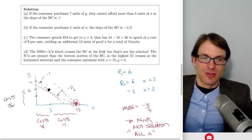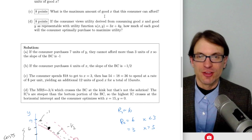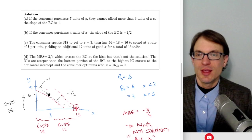With perfect substitutes preferences, to determine the optimal bundle we compare the bang-for-buck on each portion of the kinked budget constraint. We've spent $18 to get to the kink point at 3 units of X, and the analysis continues from there to find the utility-maximizing solution given the two different slopes.